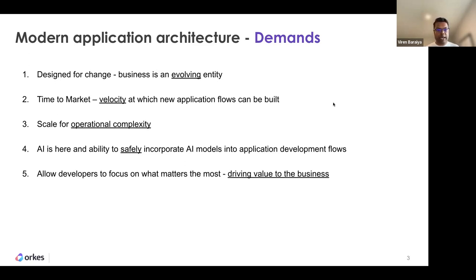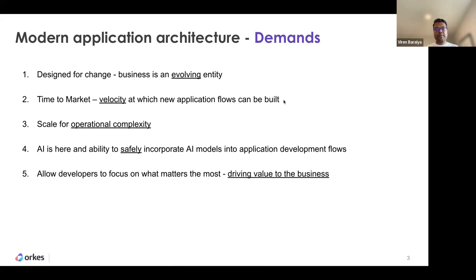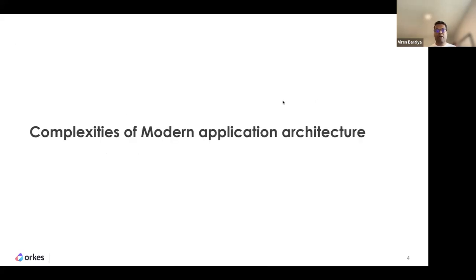Time to market has become more important than ever. Competition has increased from both traditional companies and startups breaking into various industries, so the velocity at which new application flows are built has to be much higher. And lately, AI has come into the picture — everybody is talking about how AI will accelerate innovations across industries. How do you build applications where language models are part of your stack, and how does your architecture enable developers to focus on driving value to the business?